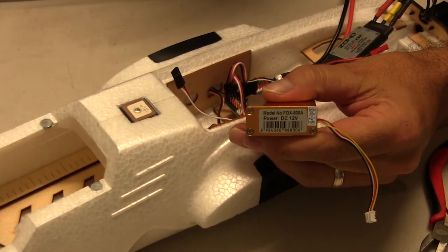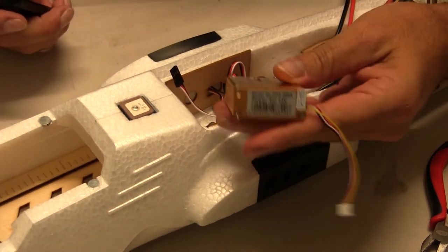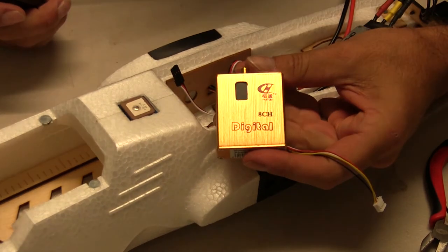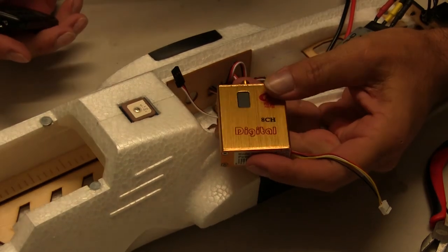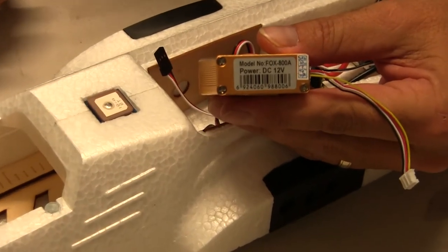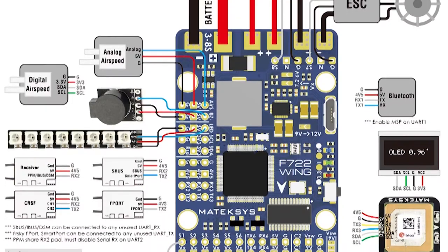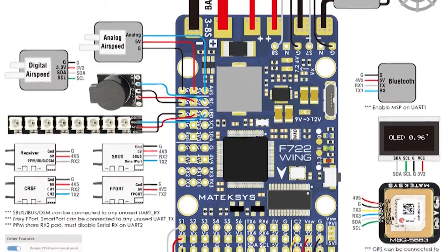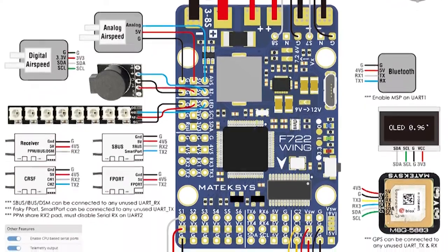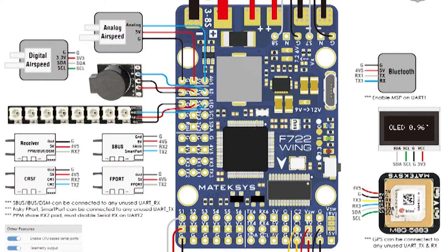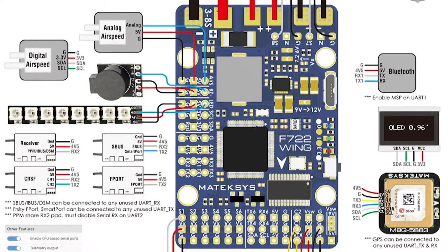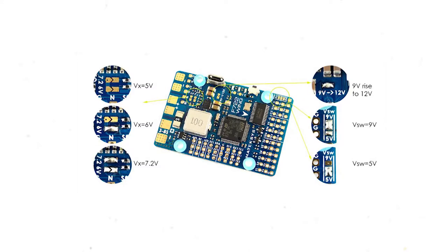All right, so a couple of things I've had to sort out here first. One being with the video transmitter, the Partom. Just looking in here it's a 12 volt. So the VTX on the Matec F722 wing board, I've had to bridge the little pad, put a solder across the pad to convert it from 9 volt to 12 volt. I'll put a picture on the screen just to show you what I'm talking about from the Matec website.